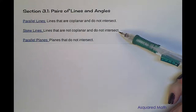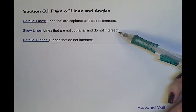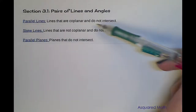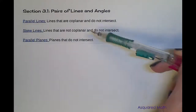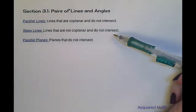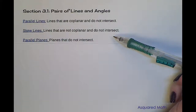What does that mean? Well, parallel lines are two lines that never intersect and they are on the same plane — we call that coplanar. Skew lines are on different planes and they will never intersect because they're on these different planes, so they are not coplanar.